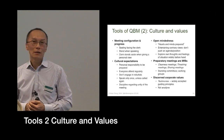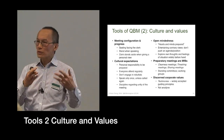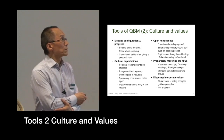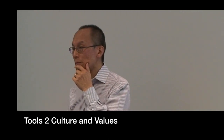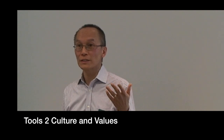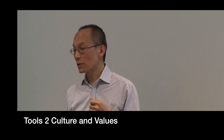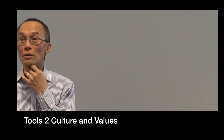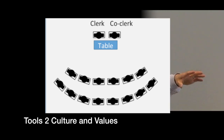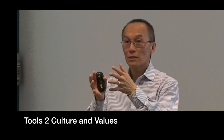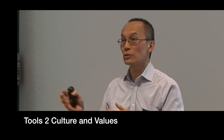The second group of tools has to do with culture and values, which shape the process and how things work. Even the way that meetings are configured facilitates the idea that you should be open to new ideas and that each person's contribution is equally valued. In a typical meeting for business, the clerk and perhaps a co-clerk sit at a table writing the minutes, and people sit in an arc around them so the clerk can see everybody. This gives a degree of equality rather than, say, a cabinet table where some people are closer to the chair than others.